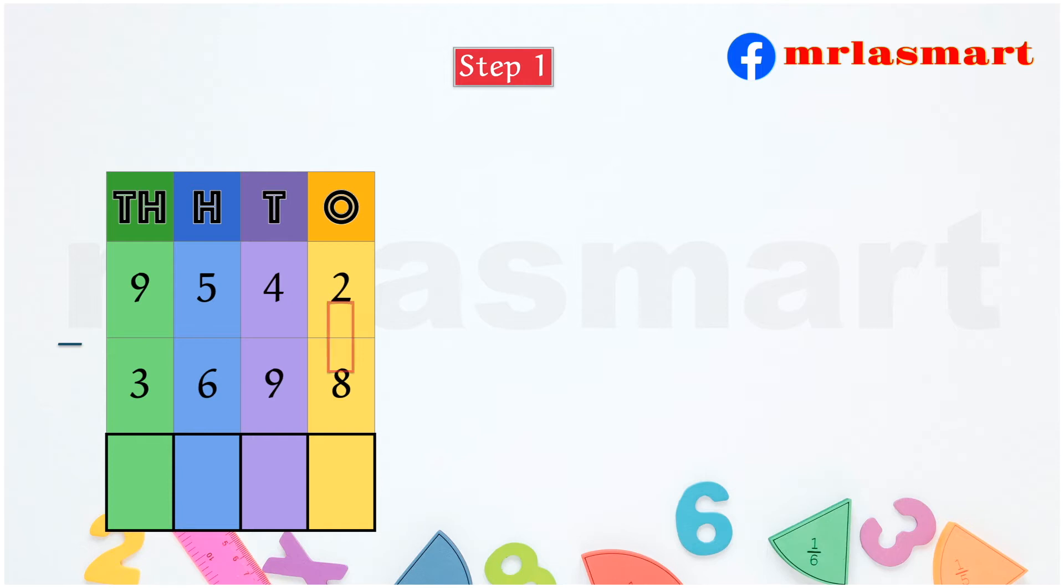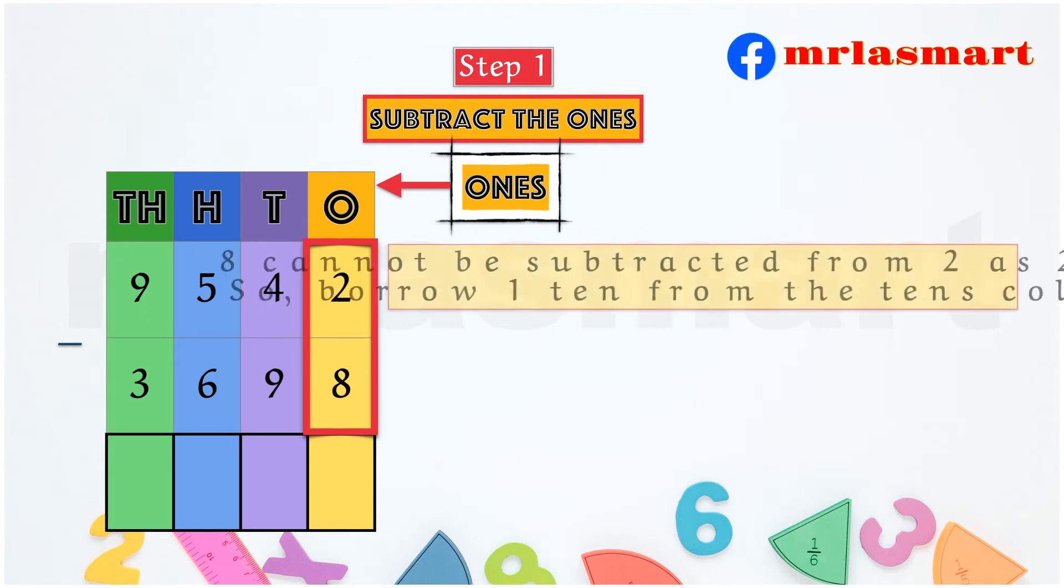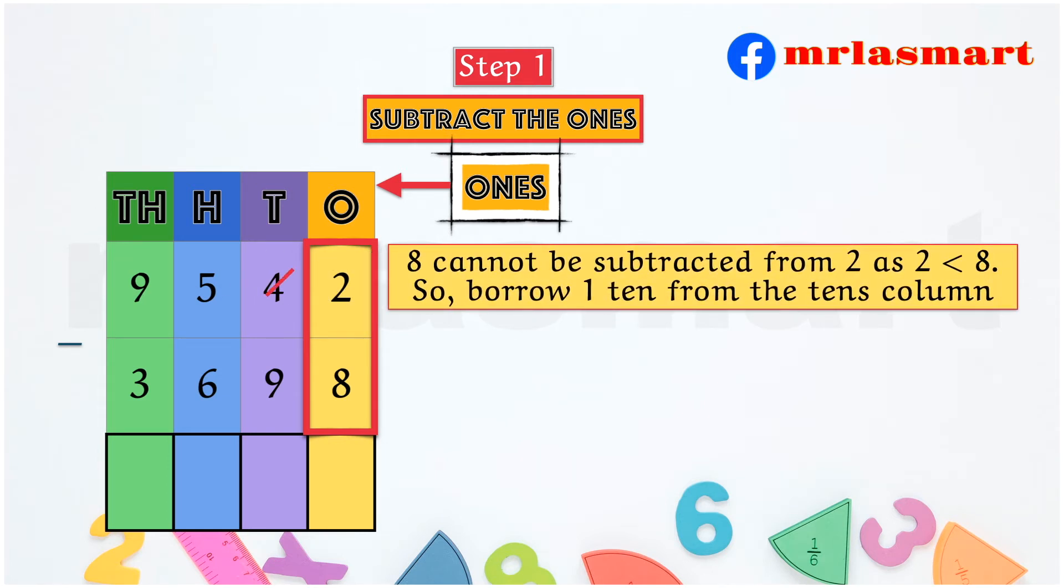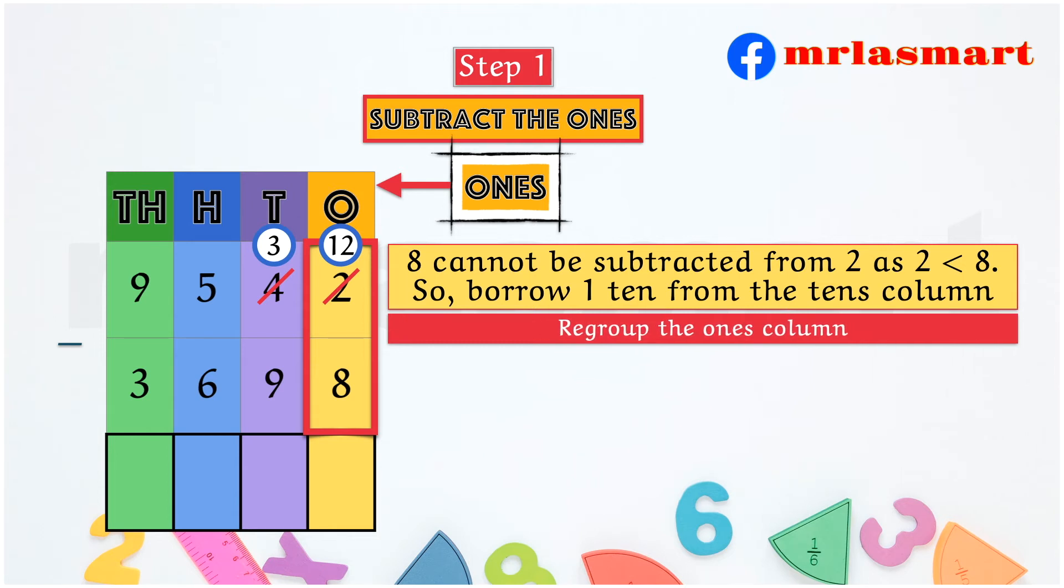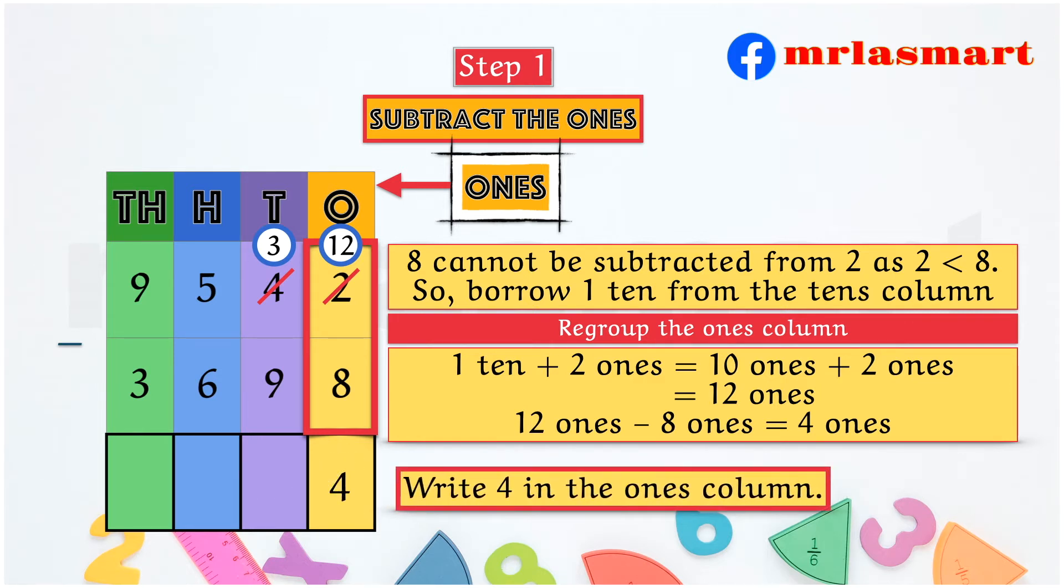Step 1. Subtract the ones. 8 cannot be subtracted from 2 as 2 is less than 8. So, borrow one 10 from the 10s column. Regroup the ones column. 1 ten plus 2 ones equals 10 ones plus 2 ones equals 12 ones. 12 ones minus 8 ones equals 4 ones. Write 4 in the ones column.